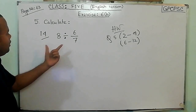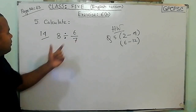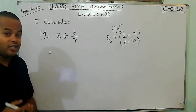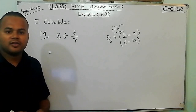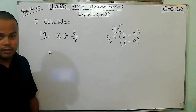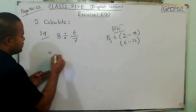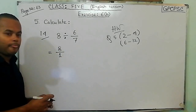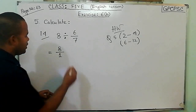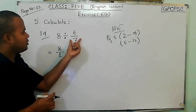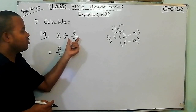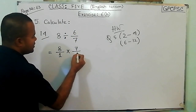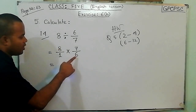That is number 40. Let's try another way. Look at the problem. We have 8 as a whole number. We already know that every whole number has denominator 1. So we have 8 by 1, and we can convert this — we can rewrite this as 8 by 1. Now if we change division into multiplication, then we have to rewrite this fraction as its reciprocal. So what is the reciprocal of this fraction?